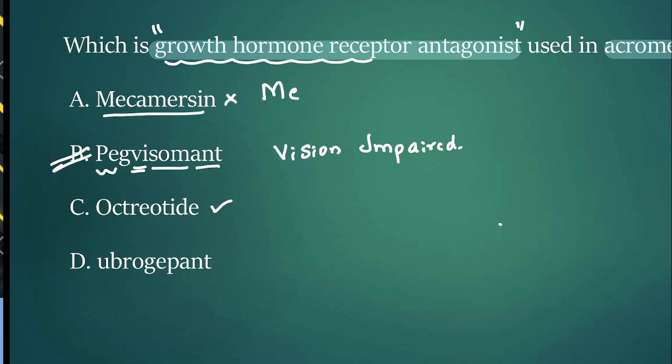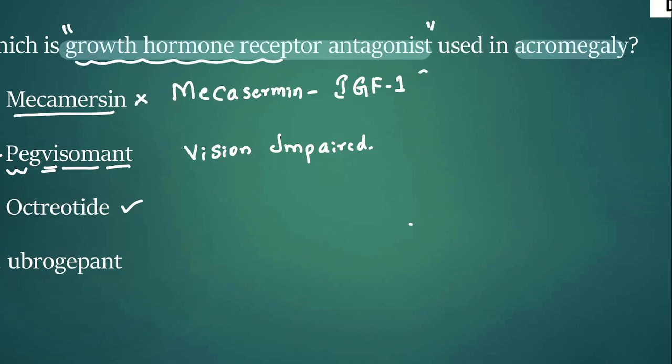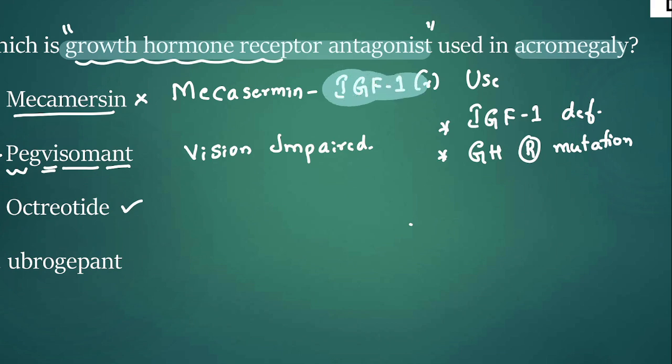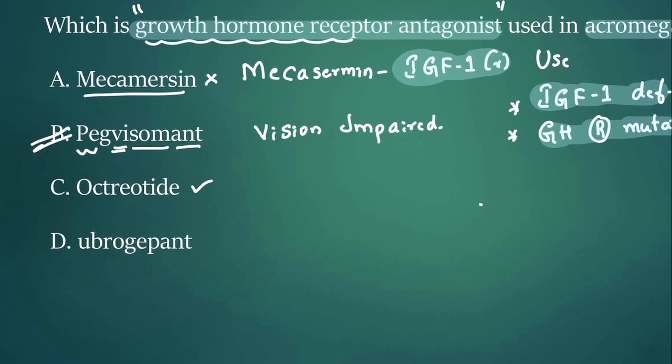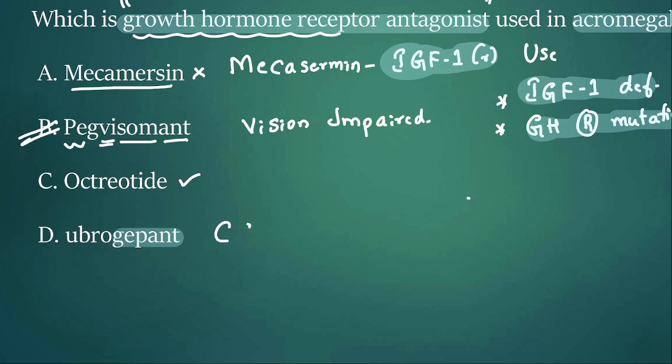Mecamersin - there is nothing like mecamersin. There is something called mecasermin. Mecasermin is a recombinant insulin-like growth factor 1. Where do we use it? We use it if there is IGF-1 deficiency. Point number two: it is used if there is growth hormone receptor mutation or it has become resistant. Any drug ending with 'gepant' - these are CGRP antagonists used for migraine. Particularly ubrogepant is used in acute attack of migraine.